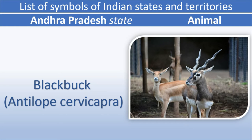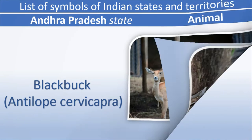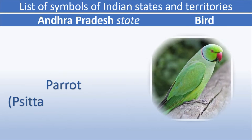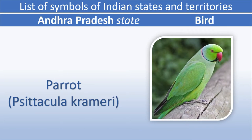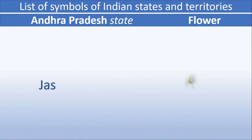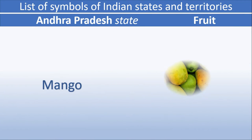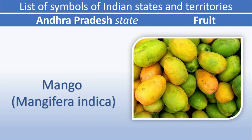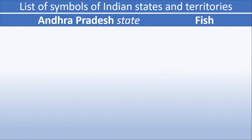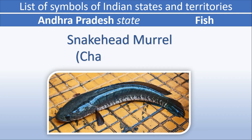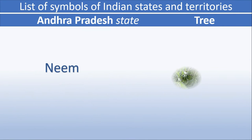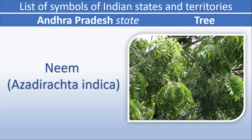Andhra Pradesh state animal: Black Buck. State bird: Parrot. State flower: Jasmine. State fruit: Mango. State fish: Snake Head Murray. State tree: (next segment).